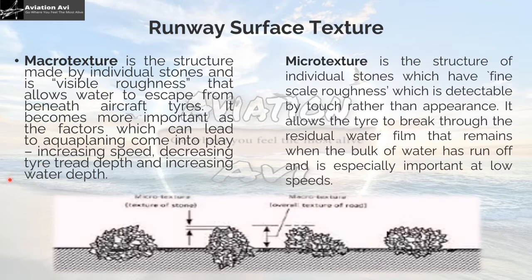Aquaplaning is a phenomenon in which, when the aircraft makes contact with a wet runway surface, a water film is formed between the tires of the aircraft and the runway surface, so there is no direct contact between the surface and the aircraft tire. Microtexture is the structure of the individual stone, with fine-scale roughness that is detectable by touch rather than appearance. Microtexture allows the tire to break through the residual water film and remains important when the bulk of water has run off, and is especially important at low speeds.